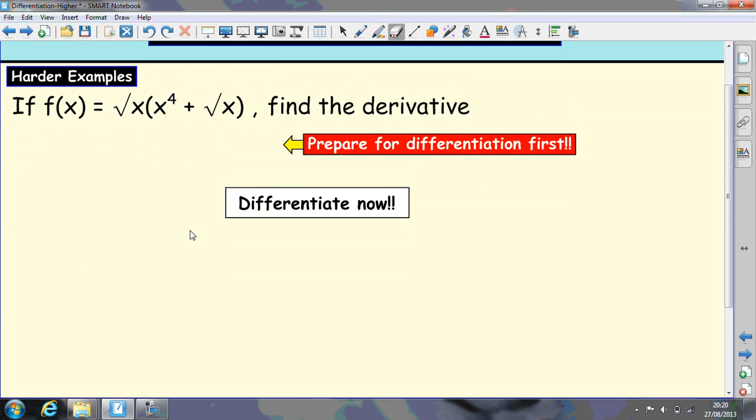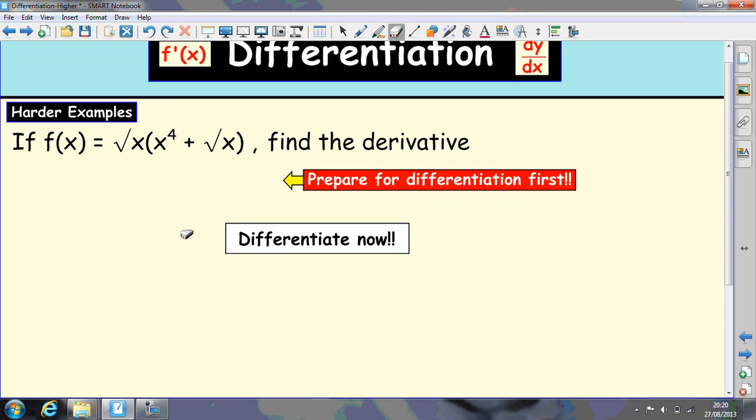In this next example, there's a few things we need to do before we can differentiate. Change any roots into fractional indices. So that's a half, and this is a half. You need to be very good at these things before you can actually differentiate. So that's x^(1/2) times x⁴ plus x^(1/2).